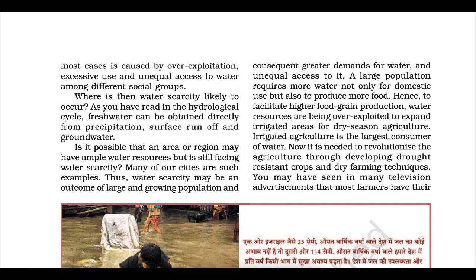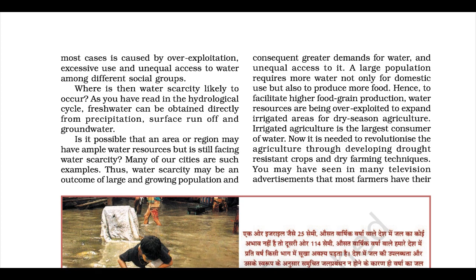Fresh water can be obtained directly from precipitation, surface runoff and groundwater. It is possible that an area may have ample water resources but still face water scarcity — many of our cities are such examples. Water scarcity may be an outcome of large and growing population with consequent greater demands for water and unequal access to it. Our nation requires more water not only for domestic use but also to produce more food.